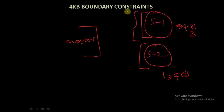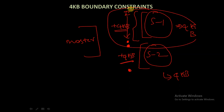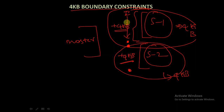The memory for slave 1 will start at an initial address and extend for 4KB, and after that point the memory for slave 2 will start and extend for another 4KB. Slave 1 is given one set of 4KB memory and slave 2 is given another set of 4KB memory. A 4KB boundary constraint is placed by allocating a particular set of memory to each slave.